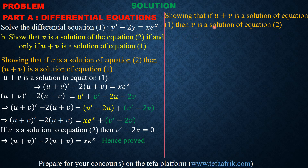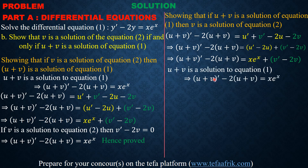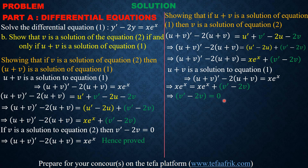For the second direction: if u plus v is a solution of equation 1, then (u + v) prime minus 2(u + v) equals x·eˣ. Expanding the left-hand side and substituting that u prime minus 2u equals x·eˣ, we can subtract x·eˣ from both sides, leaving v prime minus 2v equals 0. This means v is a solution of equation 2, completing the biconditional proof.